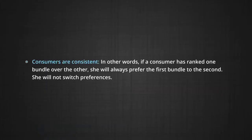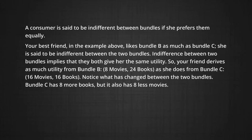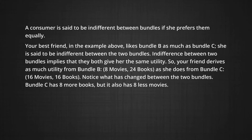A consumer is said to be indifferent between bundles if she prefers them equally. In the example discussed above, your best friend likes bundle B as much as she likes bundle C — she is said to be indifferent between the two bundles. Indifference between two bundles implies that they both give her the same utility. So your friend derives as much utility from bundle B, which contains 8 movies and 24 books, as she does from bundle C, which contains 16 movies and 16 books.